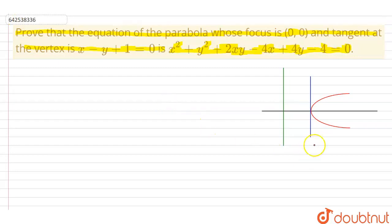This is the graph of a parabola where the blue line represents the tangent at vertex and this is the directrix. The focus given is (0,0).